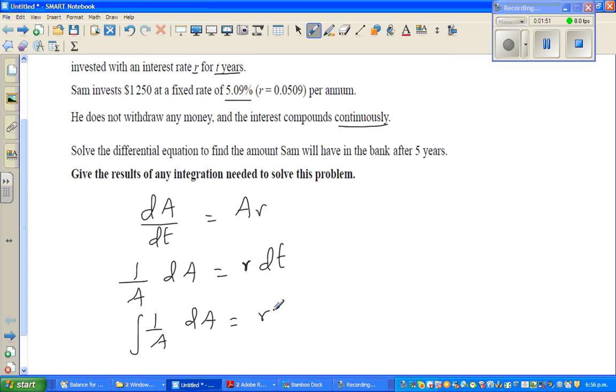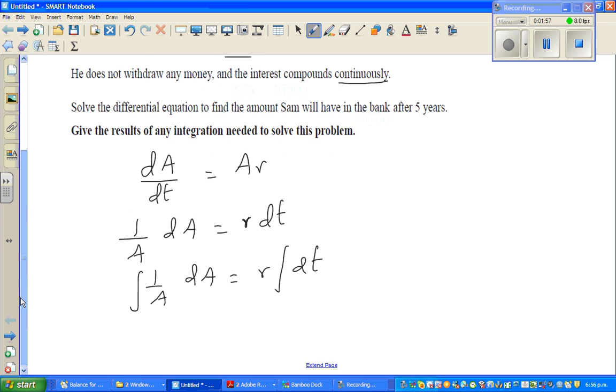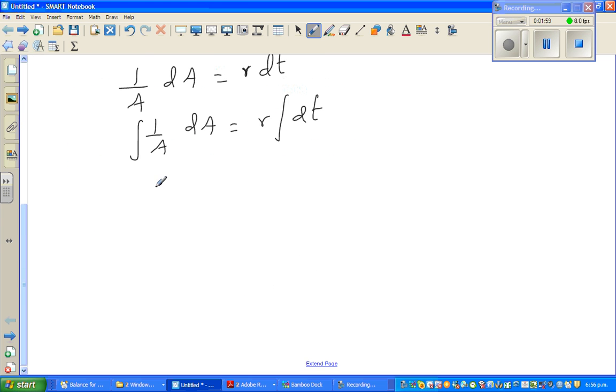Is equal to r times integration of dt. Now r is a constant so I've taken it out. So integrating both sides, I can say natural log of A is equal to rt + C, which is a constant of integration.